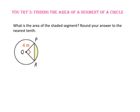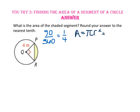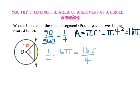Pause the video and do U-try number 3. What is the area of the shaded segment? Round your answer to the nearest tenth. To find the segment area, take the area of sector PQR minus the area of triangle PQR. Since arc PR is 90 degrees, sector PQR is 90 out of 360, or one-fourth of the circle. The area of the circle is π times 4 squared = 16π, so the area of sector PQR is one-fourth of 16π, which is 4π square meters.